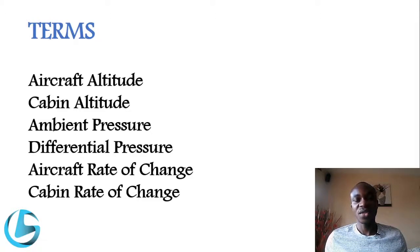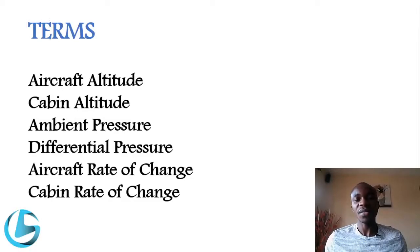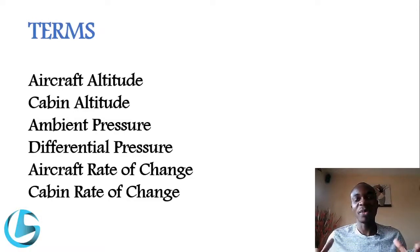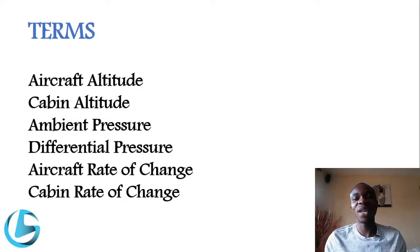The cabin altitude, unlike the aircraft altitude, is the equivalent of the pressure inside the aircraft cabin. The aircraft itself can be flying at 40,000 feet, but the pressure inside the cabin is equivalent to that of 7,000 feet. That is cabin altitude.